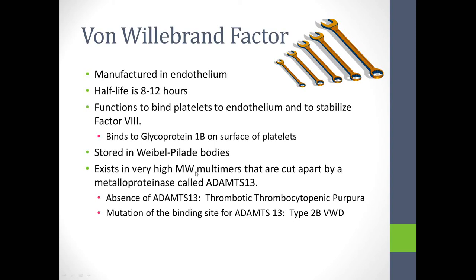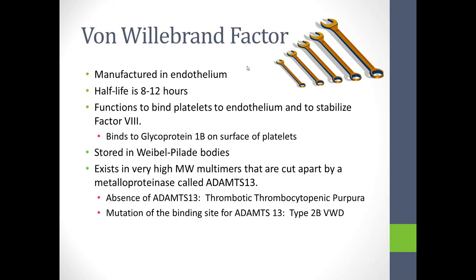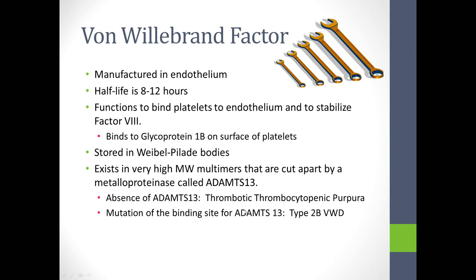Von Willebrand factor is stored in endothelium in a structure called a Weibel-Palade body, and it exists in very high molecular weight multimers that are cut apart by a metalloproteinase called ADAMS-TS13. Without the effect of ADAMS-TS13, the huge molecular weight multimer is released uncut, and it becomes a problem because it binds platelets excessively and causes clotting and bleeding. The binding of these multimers to ADAMS-TS13 is dependent on a receptor, and when a mutation of that receptor occurs, a form called type 2B von Willebrand's disease results — a discussion for later videos.